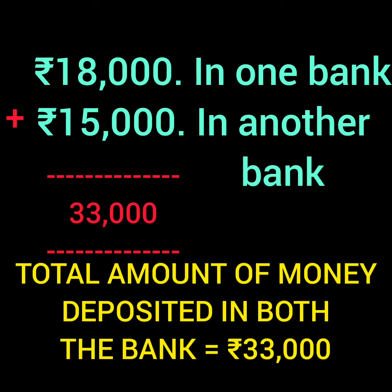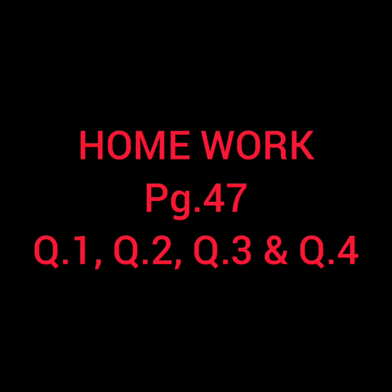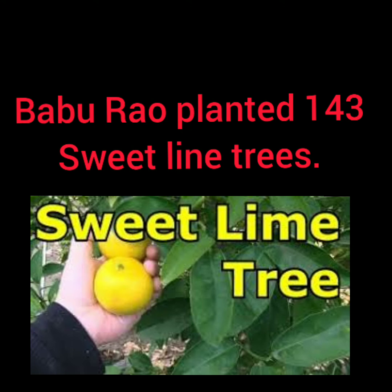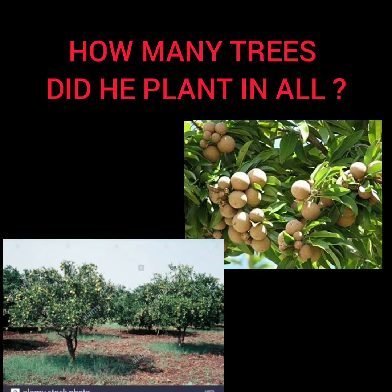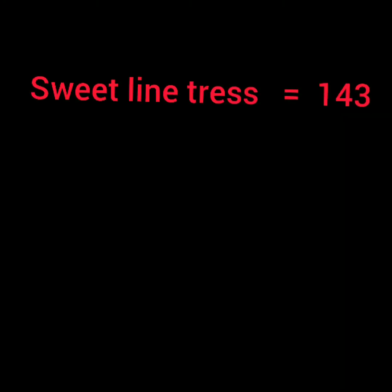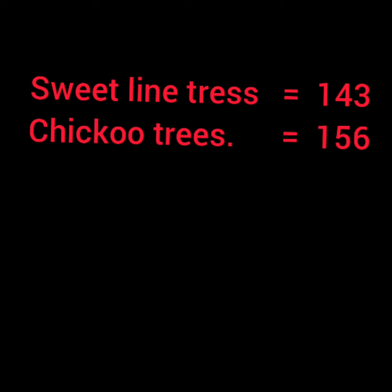The remaining four sums are on exercise page number 47 — questions 1, 2, 3, and 4 — and you will do those as homework. Read the question properly, write the statement, and write the answer. For example, the first one: Babu Rao planted 143 sweet lime — that means musumbi — trees and 156 chikku trees. How many trees did he plant in all?